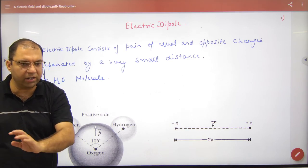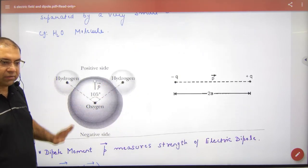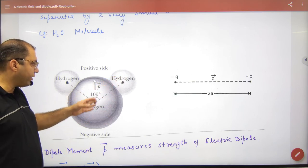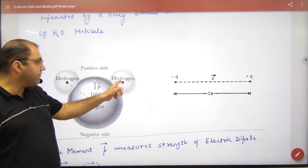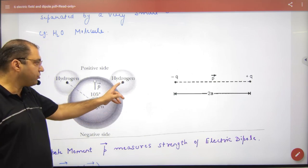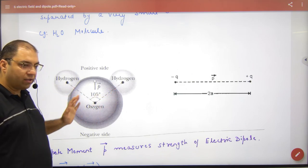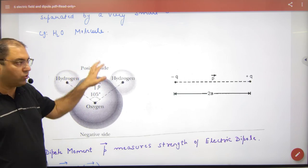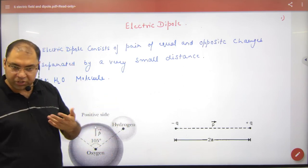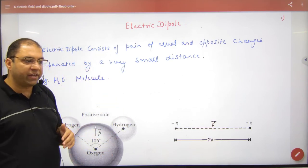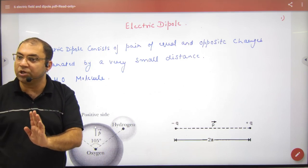How much is it? 2 meters, 1 meter? No, not as much. Hydrogen and Oxygen distance in the water molecule - the distance is so small. Because it is negative charge, it is positive charge, it is a Dipole. Positive and negative, equal and opposite charges separated by a very small distance. This is not a big distance, which is very small.